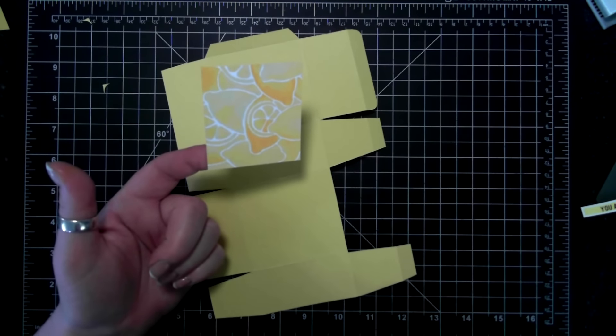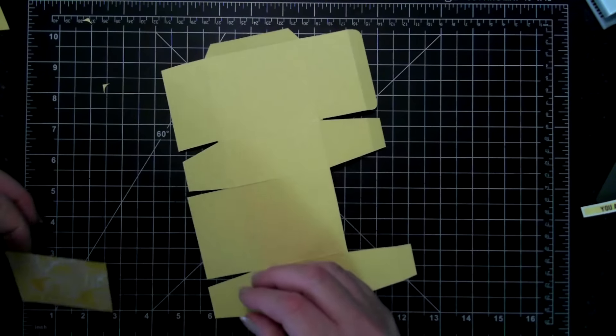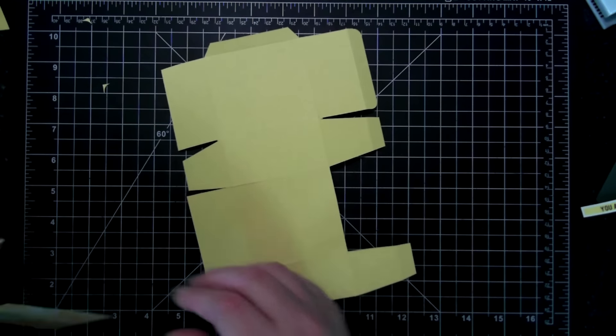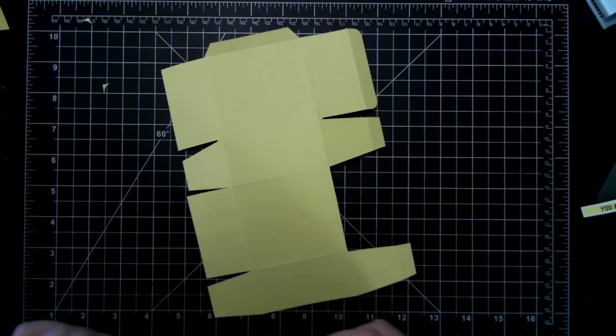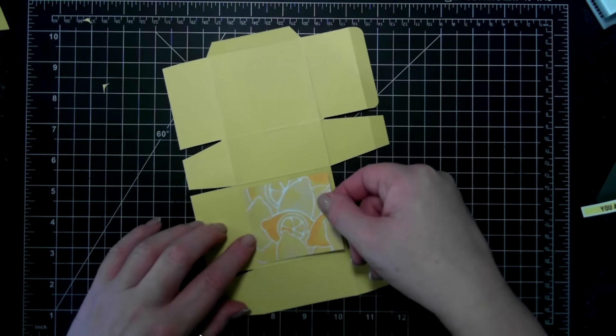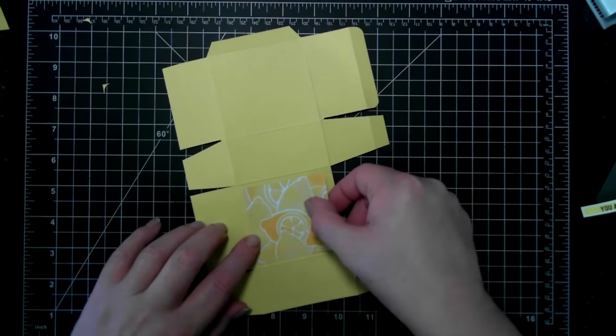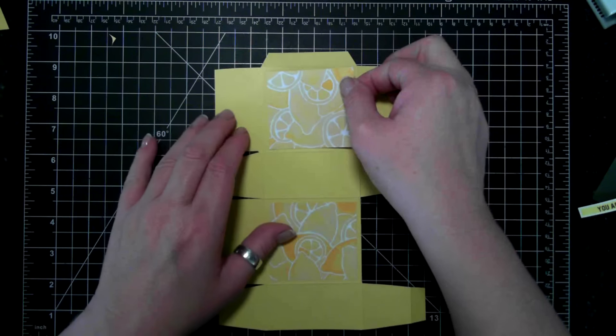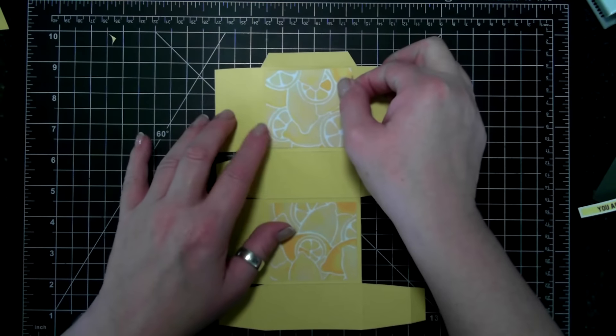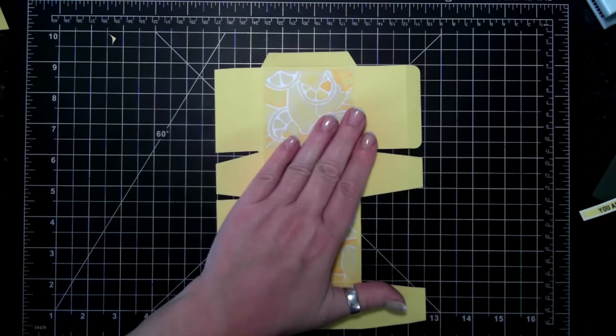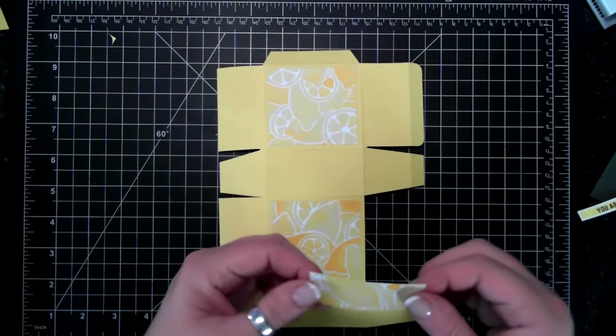We are going to require front and back pieces 2.5 by 2.75 inches. Let me just double check, 2.75 by 2.5, so you're going to need two of those sizes. And then for the sides, 1.25 by 2.75 inches.